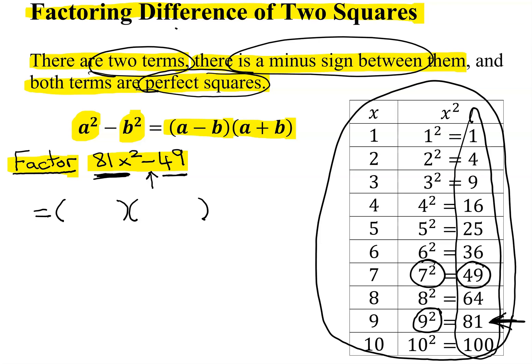So we saw over here, 81, the square root of that is 9. So it's going to be 9x times 9x, since we want to make an 81x squared.